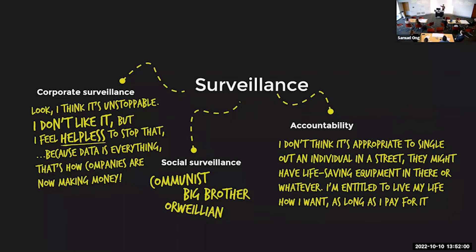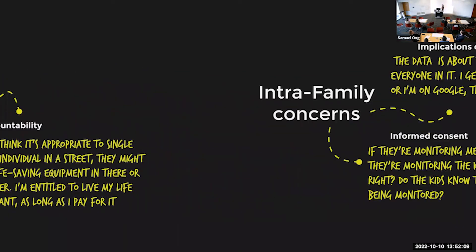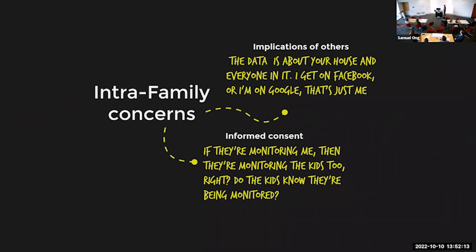Someone said: if they're surveilling me through energy data, they're probably surveilling my kids too — because through load signatures you can pick up things like heaters, and you could bust your 12-year-old for being up past midnight. This raised inter-family concerns and surveillance questions. Should my kids know? Consent started to emerge: how do we consent to this? Like Google Maps — you don't sign a form agreeing for the front of your house to be photographed over time. Whereas healthcare data is very managed with consent forms. We were having really good conversations about where energy sits in terms of the future of corporate surveillance and where consent should happen.